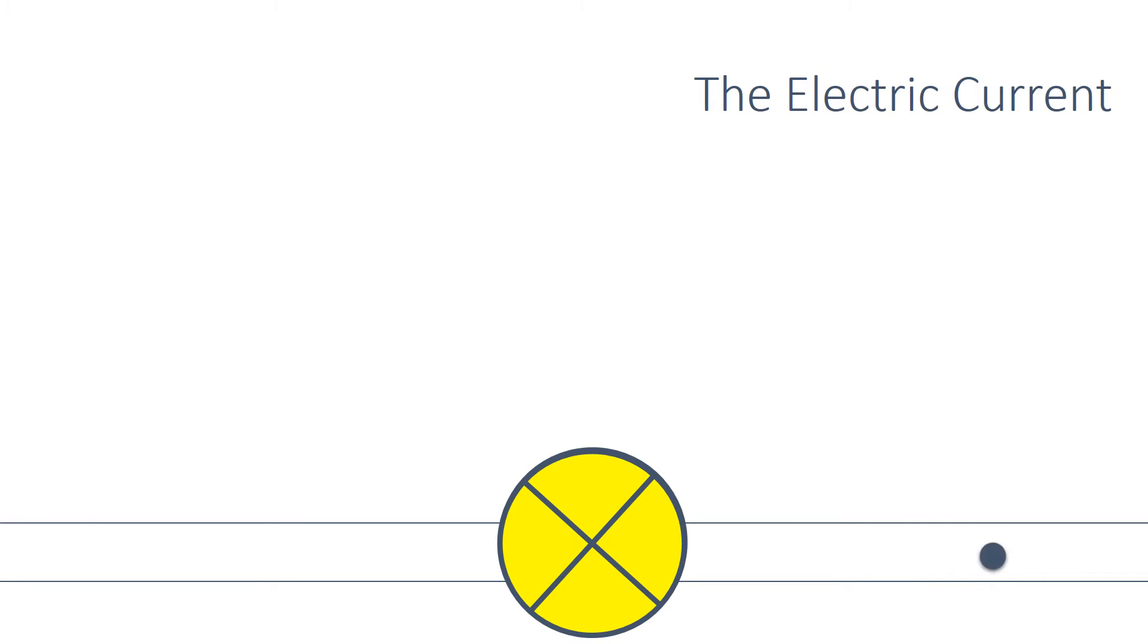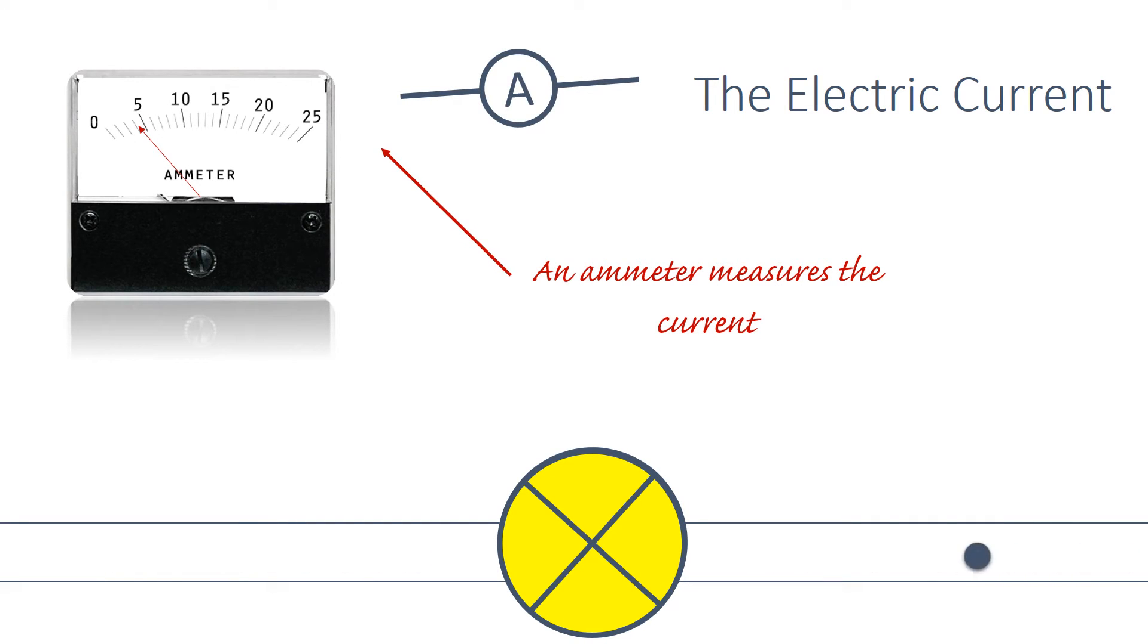The size of the electric current is the rate of flow of electrical charge, which we can think of as the flow of charge per second. The current is measured in amperes or amps using an ammeter.